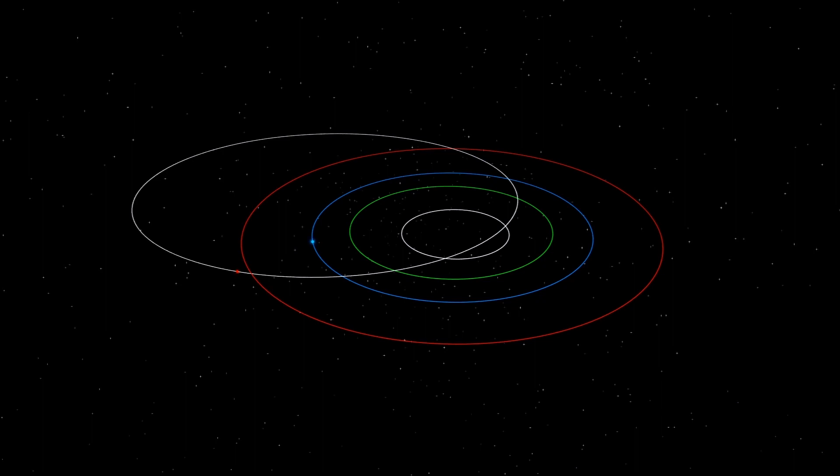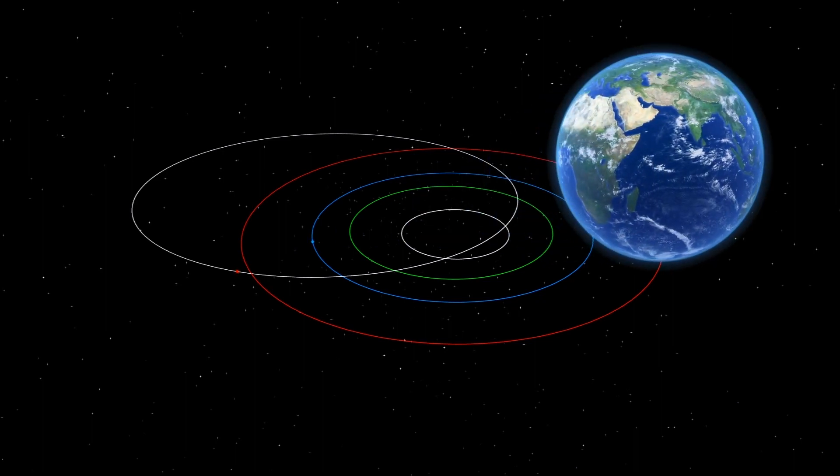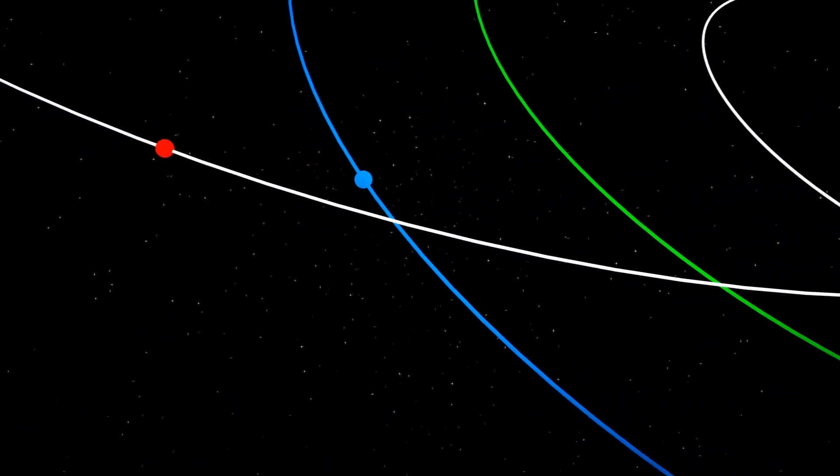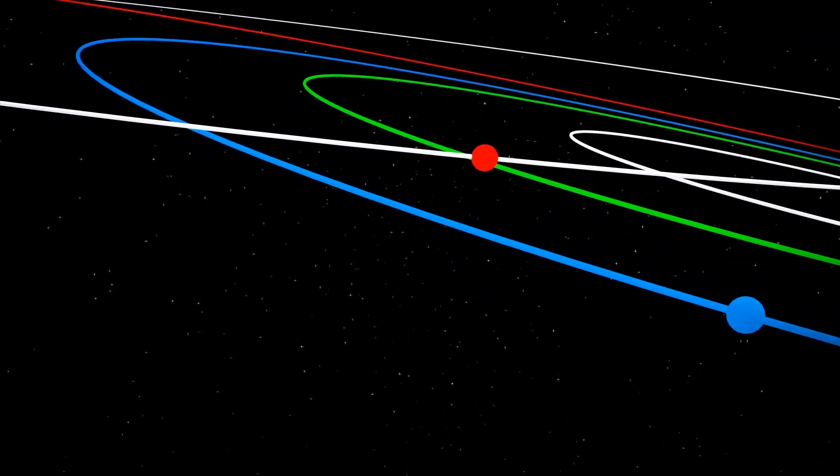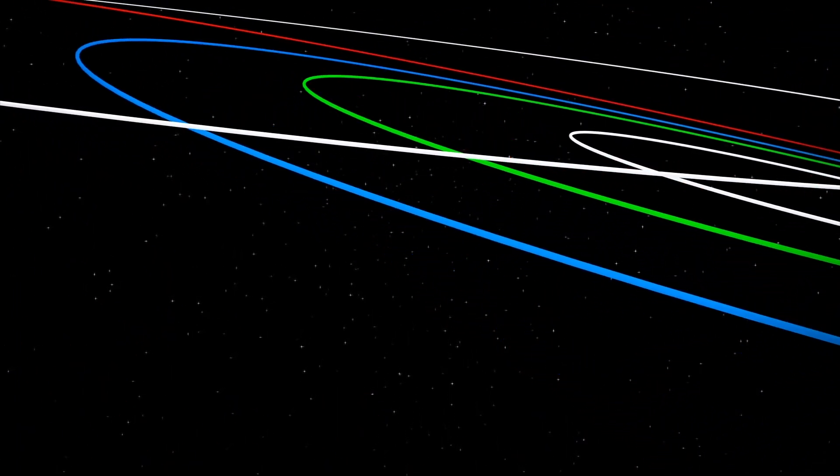NASA considers this asteroid a near-Earth object and estimates that it will miss Earth by a margin of 15.2 lunar distances or 5.8 million kilometers at 11 p.m. on February 15th.